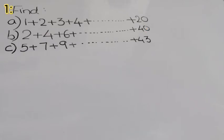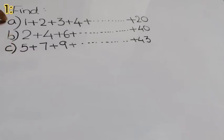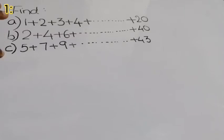Here the question is — I think this type of question is very familiar to you all. You could see such type of questions in previous question papers. First one is A: 1 plus 2 plus 3 up to 20; find the sum of 2, 4, 6 up to 40; and find the sum of 5, 7, 9 up to 43. So let's do this one.